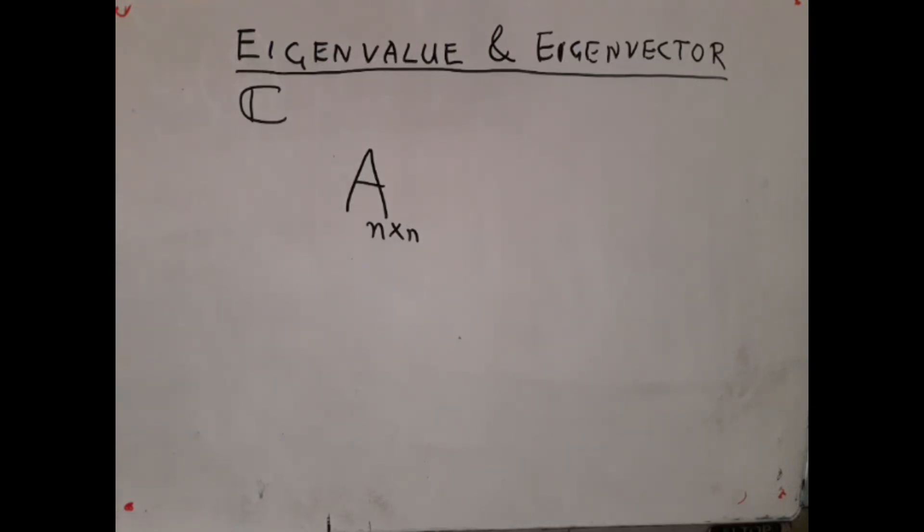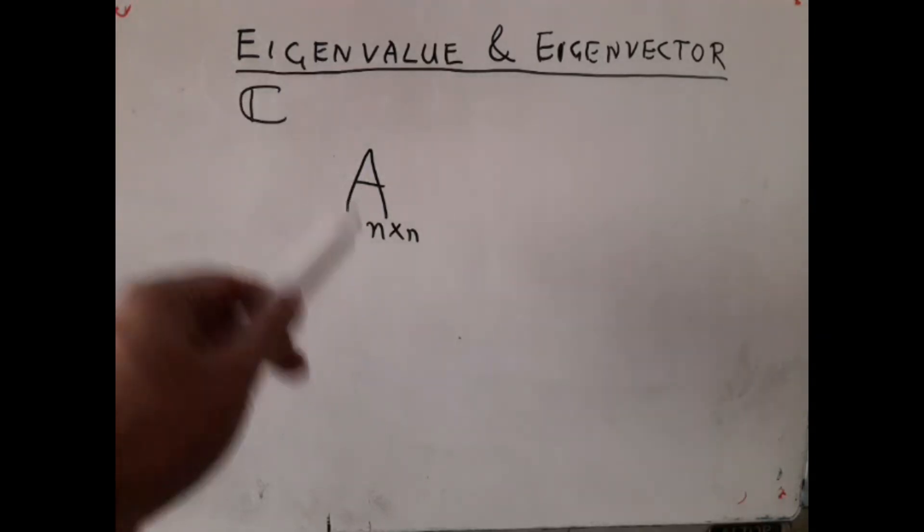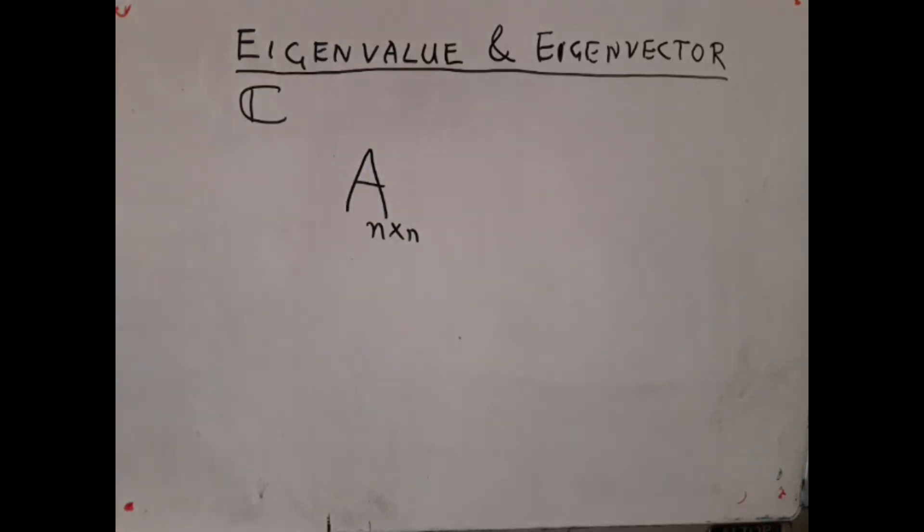Now, the problem is the following. I have a matrix, a square matrix, N by N, over the field C. So it could be C, it could be R, but typically we will work with C, not any other field.